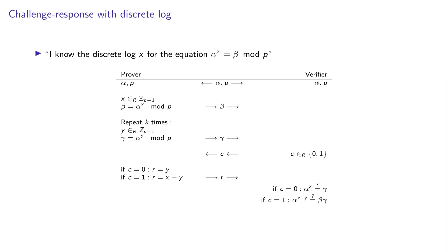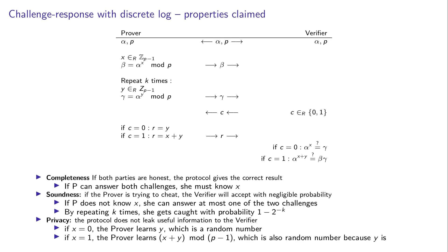Let's reason about this protocol through the three properties. There's no succinctness concern here. For completeness — if both parties are honest the protocol gives the correct result. If the prover can answer both challenges then the prover must know X, because it knows Y and it knows X plus Y modulo P minus 1, so it can compute the difference, which is X.